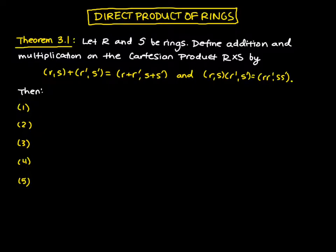And so if we use these definitions of addition and multiplication, we get the following. First is that the direct product R cross S is a ring.